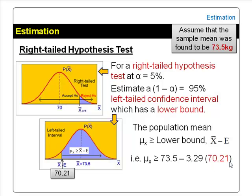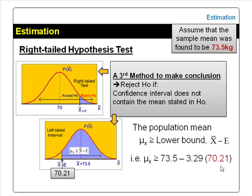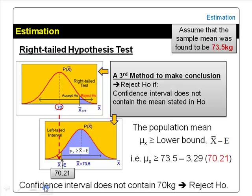That is, the population mean can be any value greater than or equal to 70.21 kg. In my video on hypothesis testing, I introduced two methods to make a conclusion: the critical region and test statistic method, and the p-value and alpha method. I will show you a third method using the confidence interval and the mean stated in the null hypothesis. In this third method, if the confidence interval does not contain the mean stated in the null hypothesis, we reject the null hypothesis. Since this interval does not contain the 70 kg stated in the null hypothesis, we reject the null hypothesis.